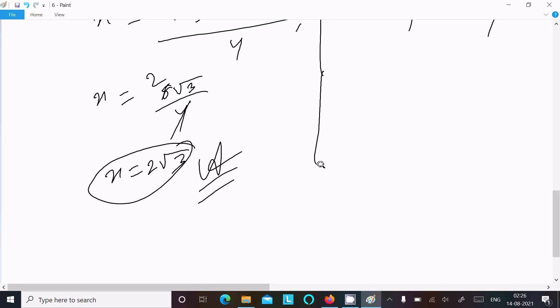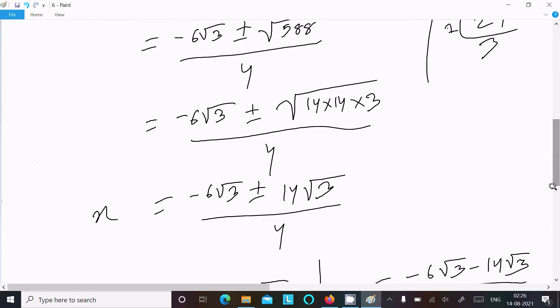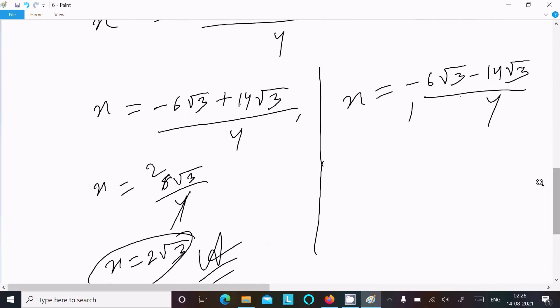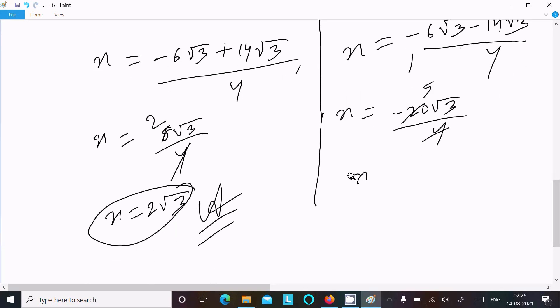Next is x with the negative sign: x = (-6√3 - 14√3) / 4 = -20√3 / 4. It cancels by dividing by 4: the next answer is the value of x = -5√3. So this is the second answer of this equation.